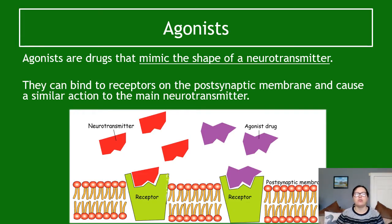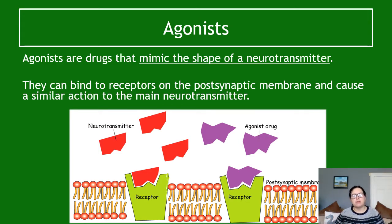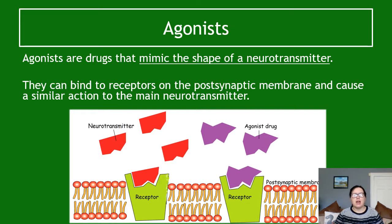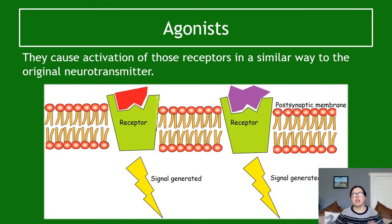Agonists are drugs that mimic the shape of a neurotransmitter. Say you do not have enough of a neurotransmitter being produced — for example, very low endorphin levels. You might look to make an agonist of that neurotransmitter. They bind to receptors on the postsynaptic membrane and cause a similar action to the main transmitter. They are essentially a synthetic, human-made version of a neurotransmitter with a similar but not identical shape.